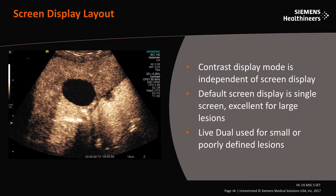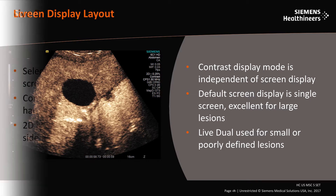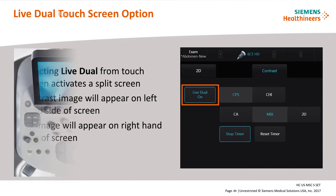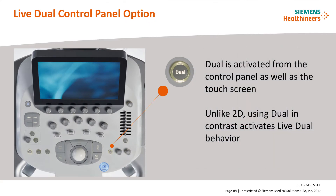Screen display layout is independent of the contrast display mode and is either single or dual screen. The default screen layout is single screen, which is excellent for large lesions. Live dual is an available option and is often used with smaller or poorly visualized lesions. There are two options for activating dual screen. Option one: from the touch screen, select live dual to split the screen and simultaneously display the contrast image on the left side and the 2D image on the right side. Option two: select the dual key on the right side of the control panel to activate the live dual display. The on-screen layout of the contrast image versus the 2D image is in a fixed position with no reversal.